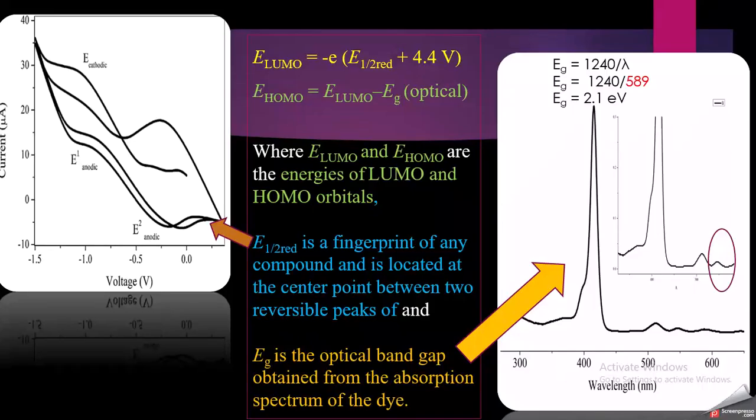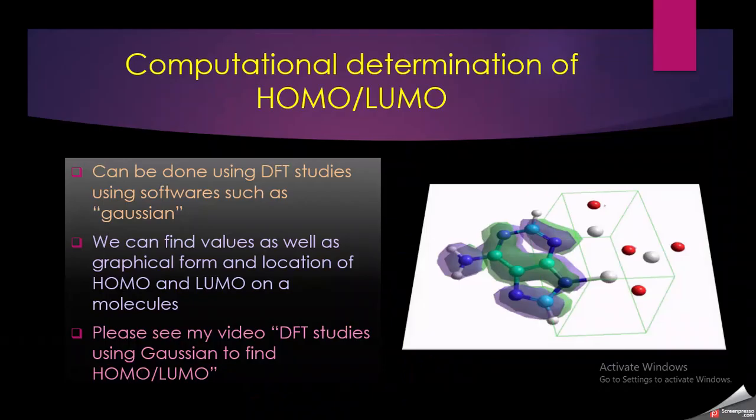This can be done using different software, for example Gaussian. It can give you very good results for HOMO and LUMO energy levels. We can also find the graphical form of the HOMO or LUMO energy level.